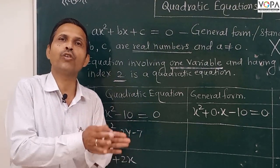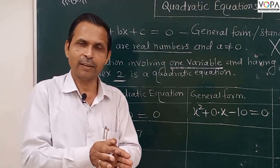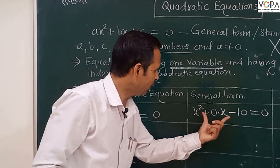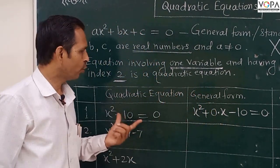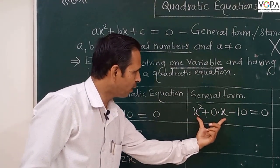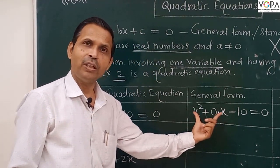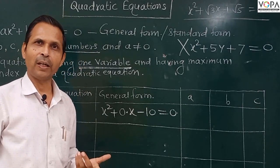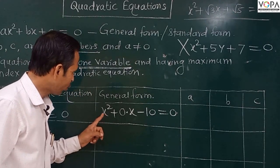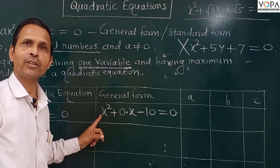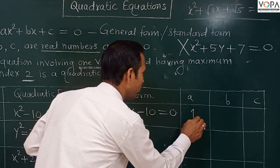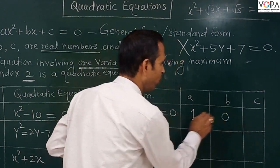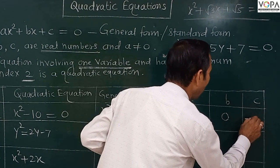By inserting the values of b and c, we can write the general form of that quadratic equation. From this general form we can find a, b, and c. The coefficient of x² is 1, so the value of a is 1, value of b is 0, and value of c is -10.